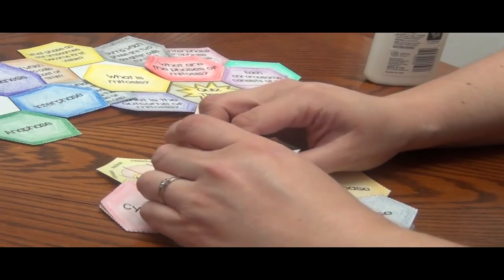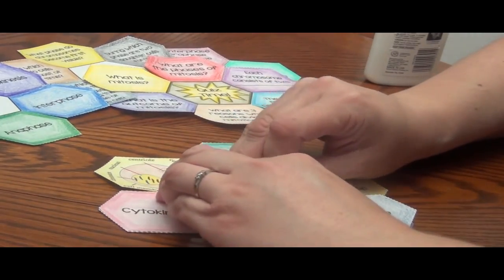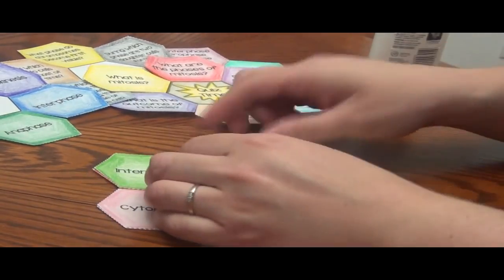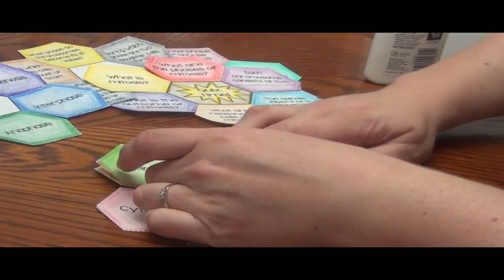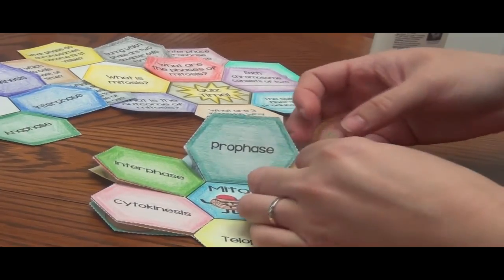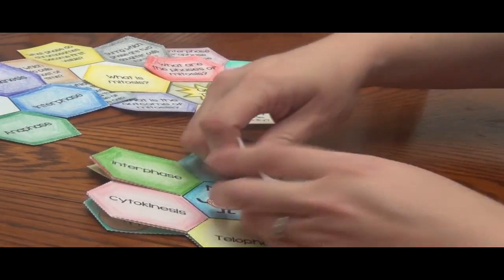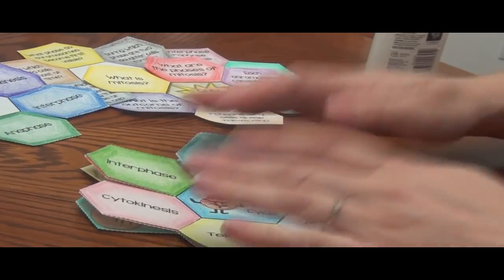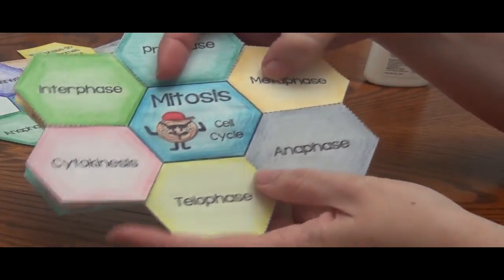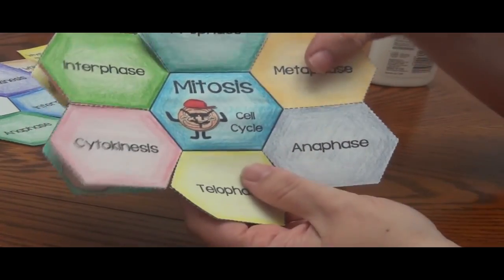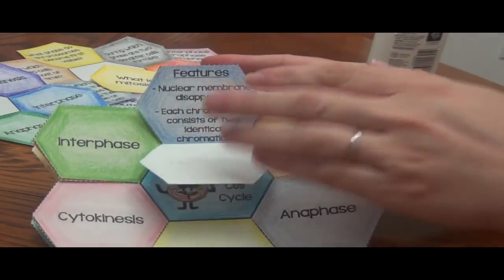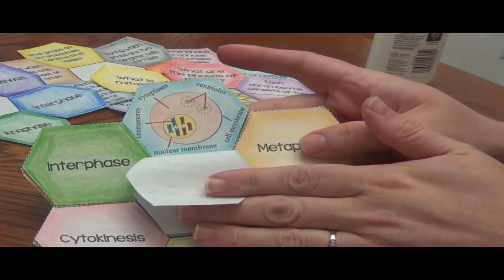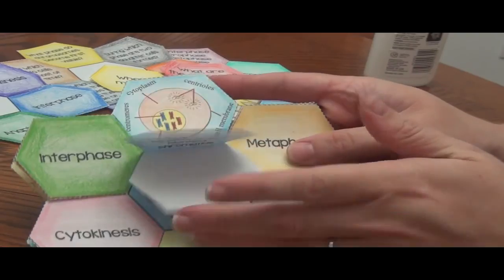Now, here comes the tricky part. Not really tricky, but you just want to make sure that you have students do it correctly. Because if they don't, then the foldable is not going to work like it should. So I have my top done, as you can see. So if I want to know about a certain phase, I can actually fold it down and see the features. And then I fold down again, and I can actually see the picture or the diagram.